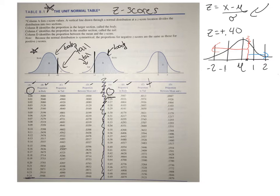Column D is kind of a funny one. This is the proportion between the mean and the z.